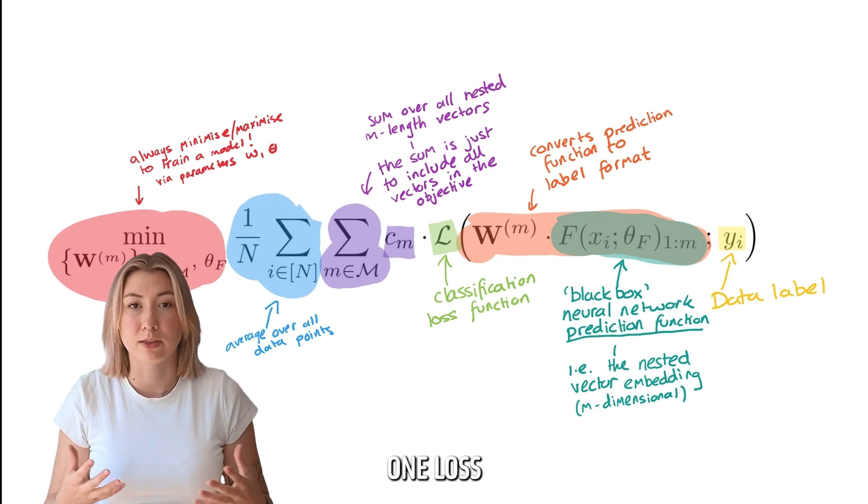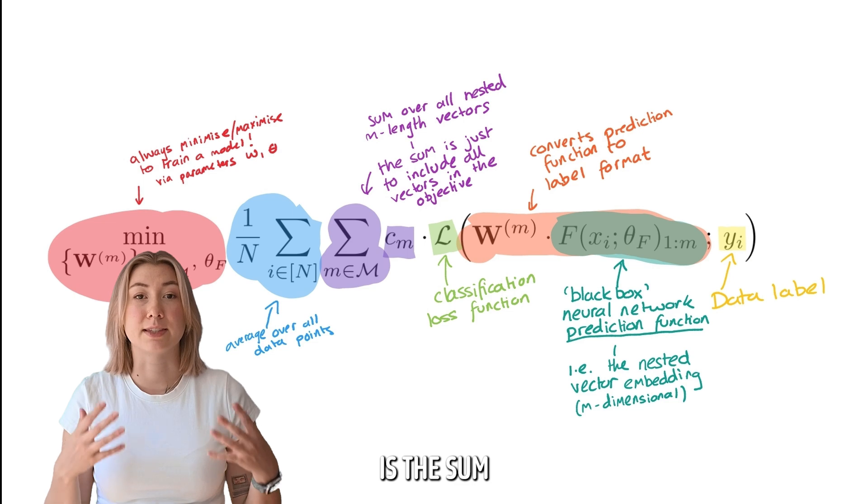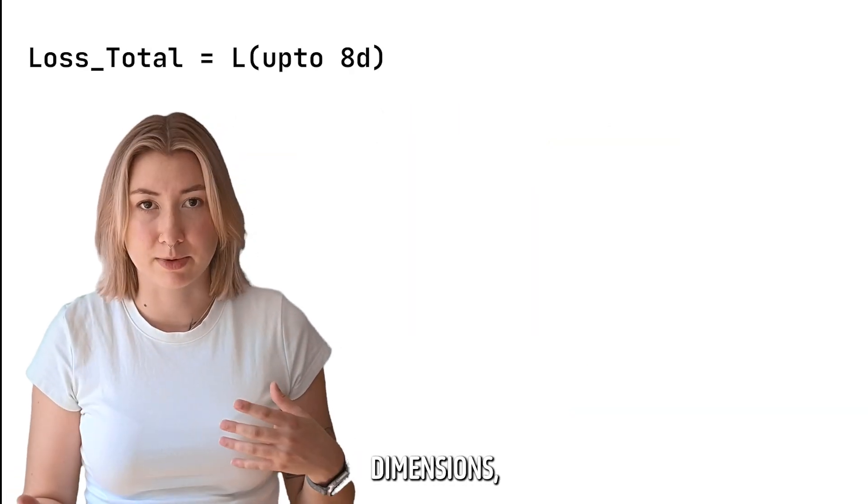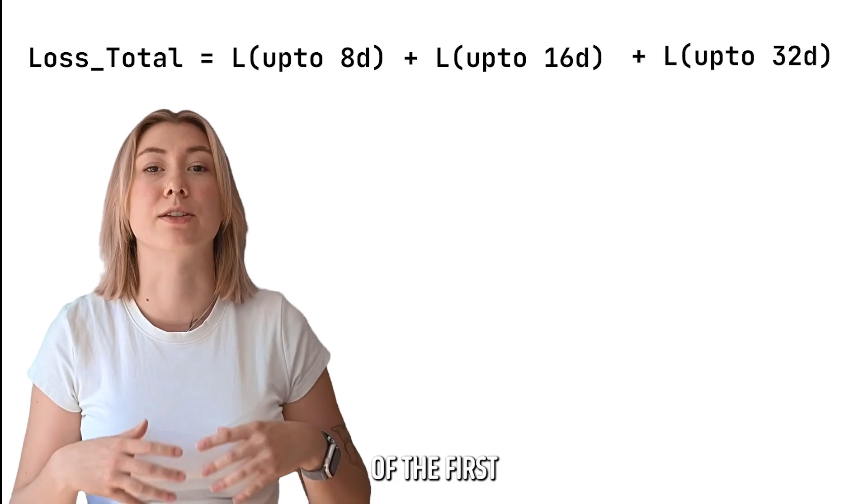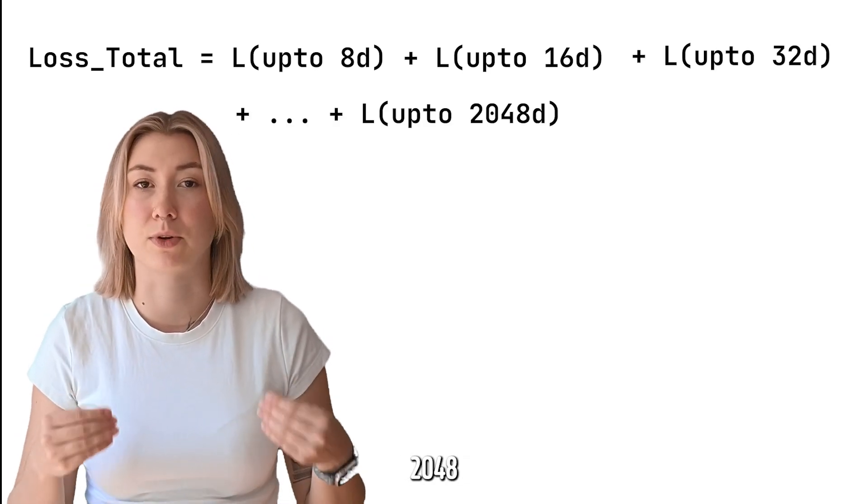Instead of just having one loss for the entire vector of 2048 dimensions, now our loss total is the sum of all the losses of the vector dimension ranges. So the loss of the first 8 dimensions, plus the loss of the first 16 dimensions, plus the loss of the first 32 dimensions, all the way up to the loss of the full 2048 dimensions.